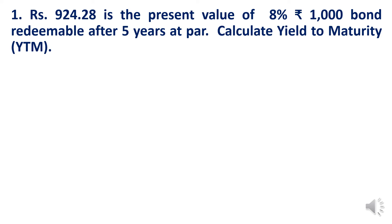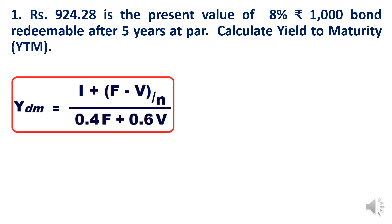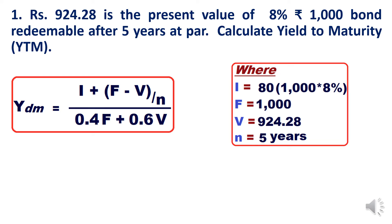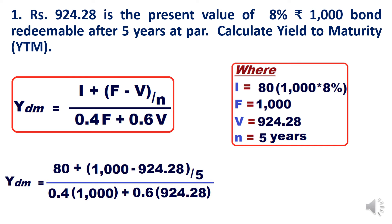So: face value F = Rs.1000, coupon rate 8%, current market value V = Rs.924.28, and number of years to maturity N = 5. We apply the formula: YTM = [I + (F − V) / N] / (0.4F + 0.6V), where I = 1000 × 8% = Rs.80. Applying the formula gives approximately 0.1.